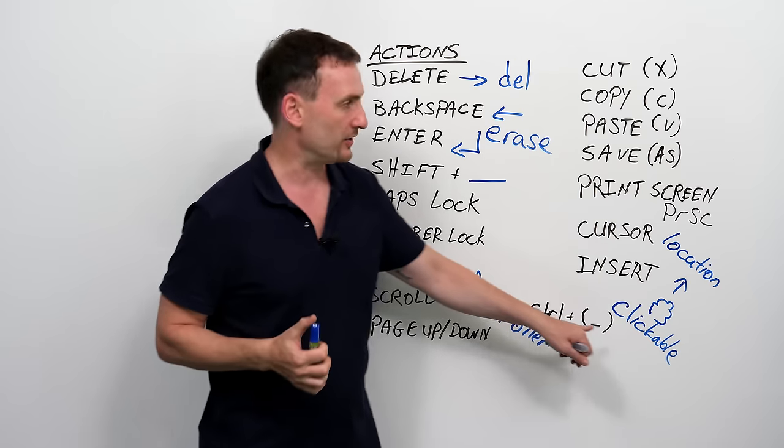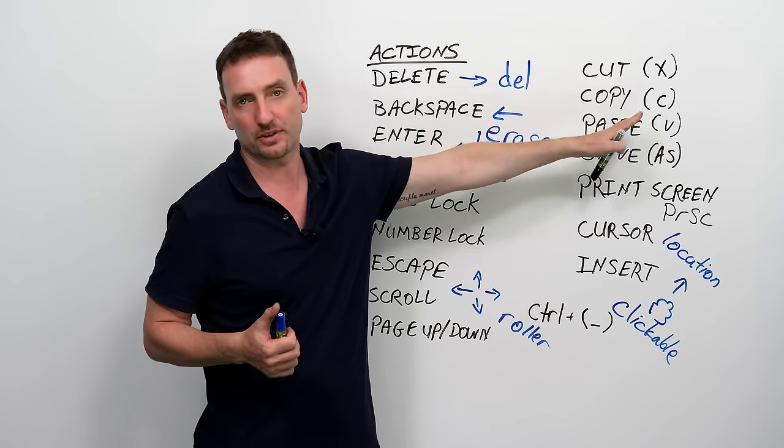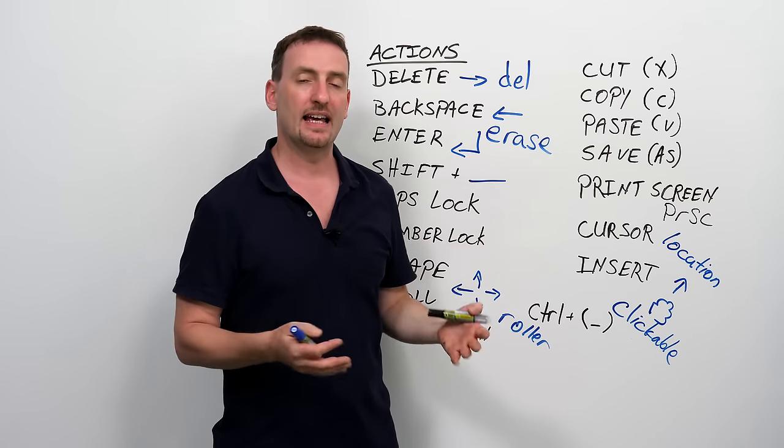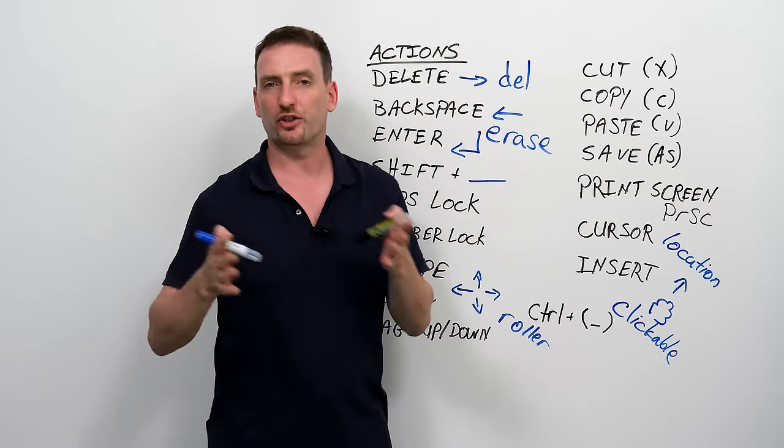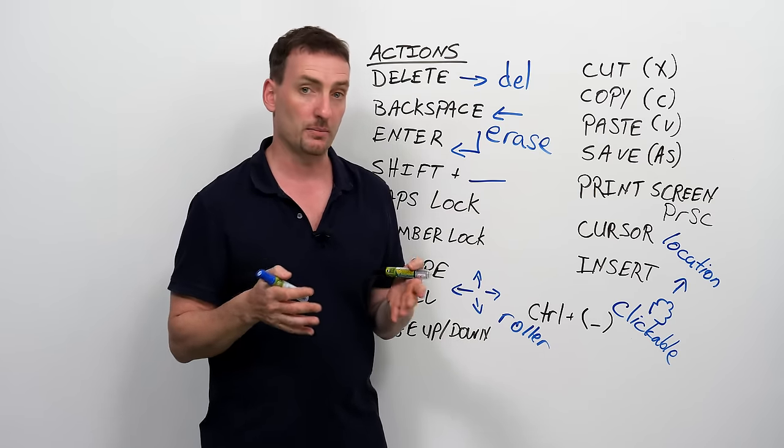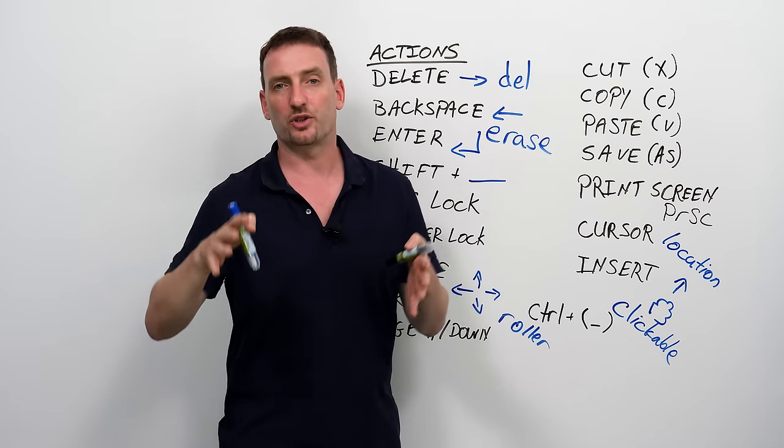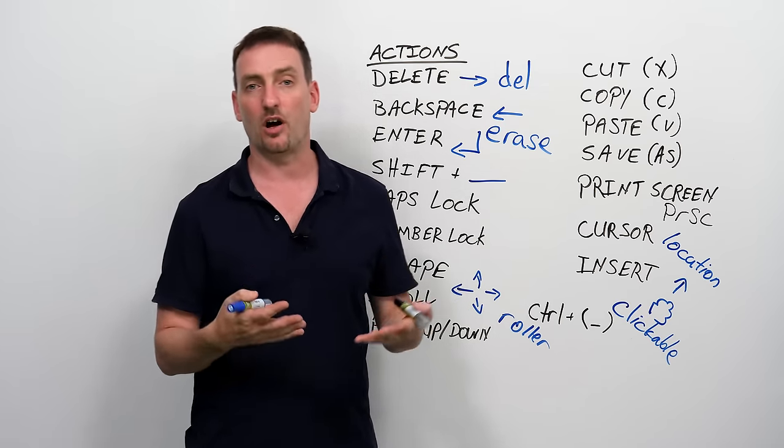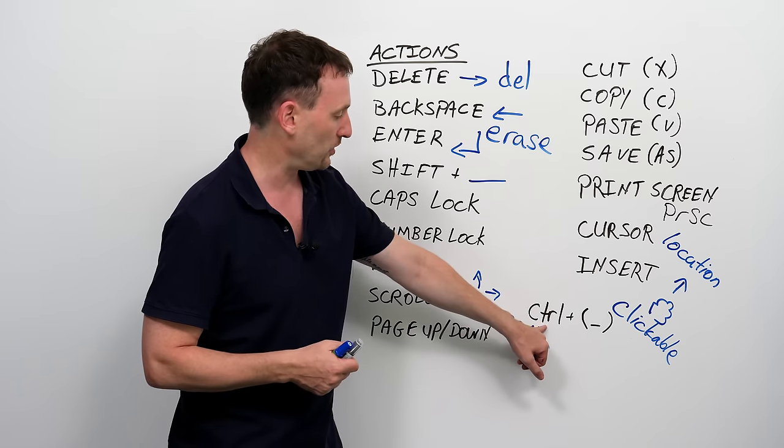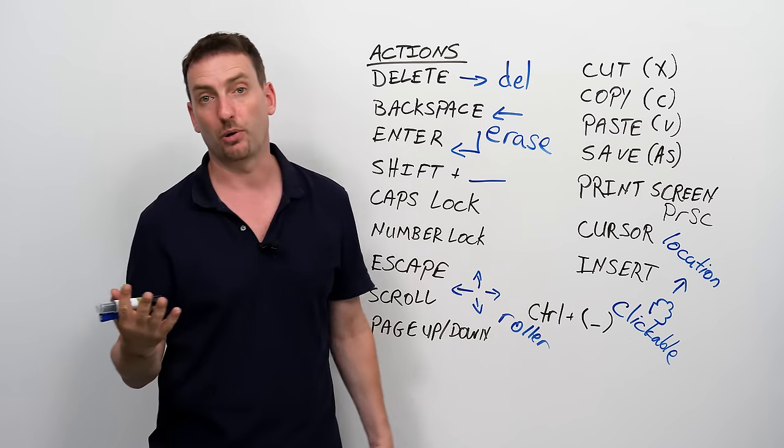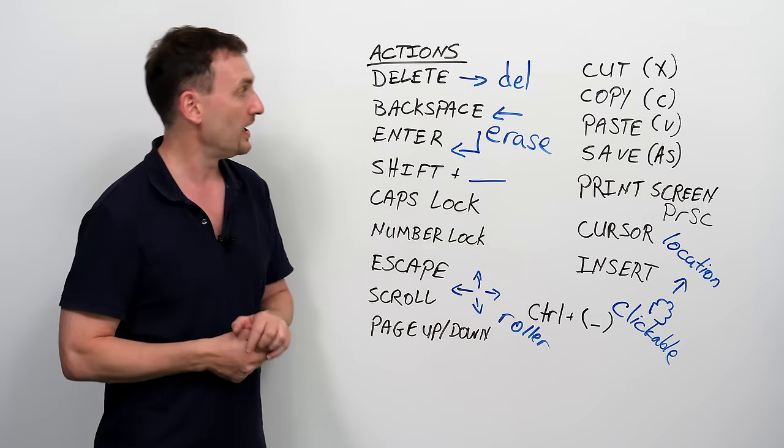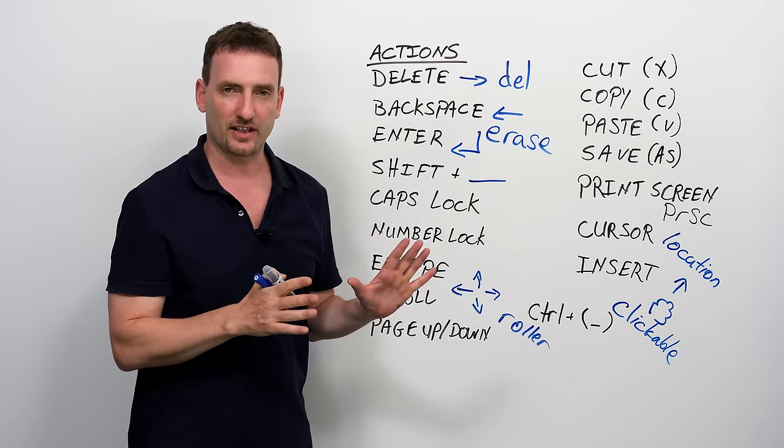Now, Ctrl plus whatever. Like I said, Ctrl X, Ctrl C. These are all shortcuts. There are a lot of different shortcuts you can use with your keyboard. Do a little bit of research on the internet. Find out how you can use the shortcuts to save yourself a lot of time. But just so you know, CTRL button, Ctrl. That's what it's there for. So, these are the basic functions of the keyboard.